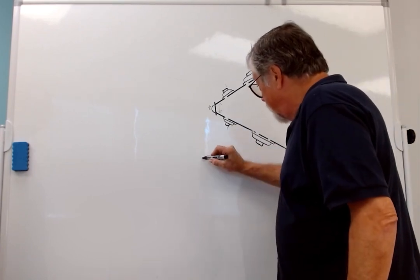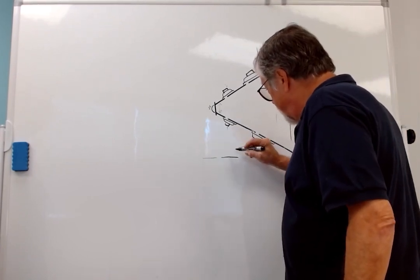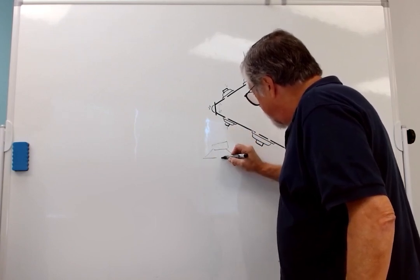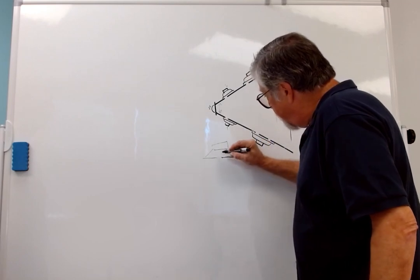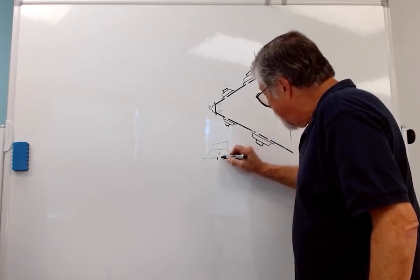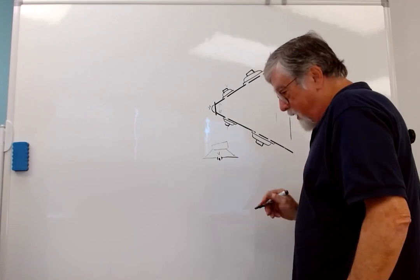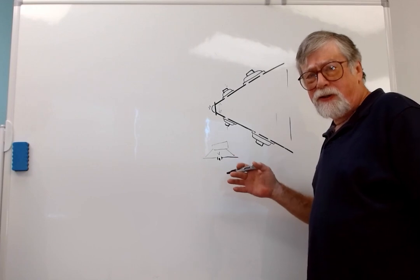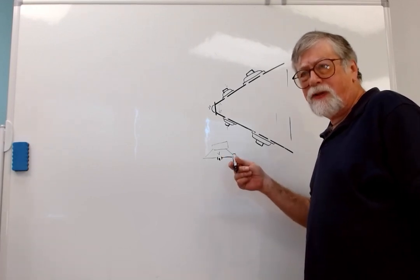And what goes on there is you have the driver mounted over the baffle with a hole here. So what you have is the trap volume inside here, and this is a port. And that produces an acoustic low-pass filter, like a crossover low-pass filter, except this is acoustic.